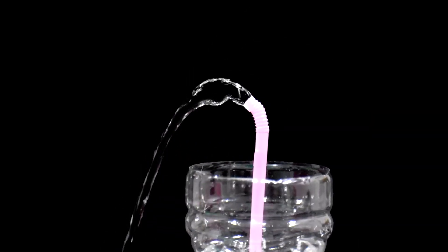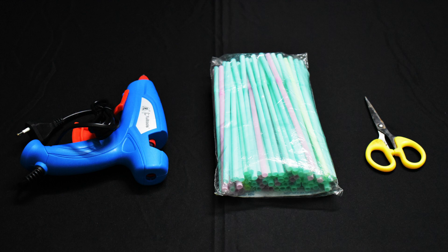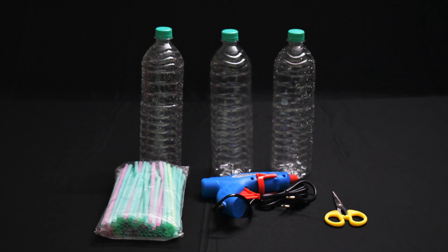Today we're going to see how to make this really cool fountain at home. To make it we're going to use three water bottles and a number of drinking straws. We will also need a glue gun and scissors.